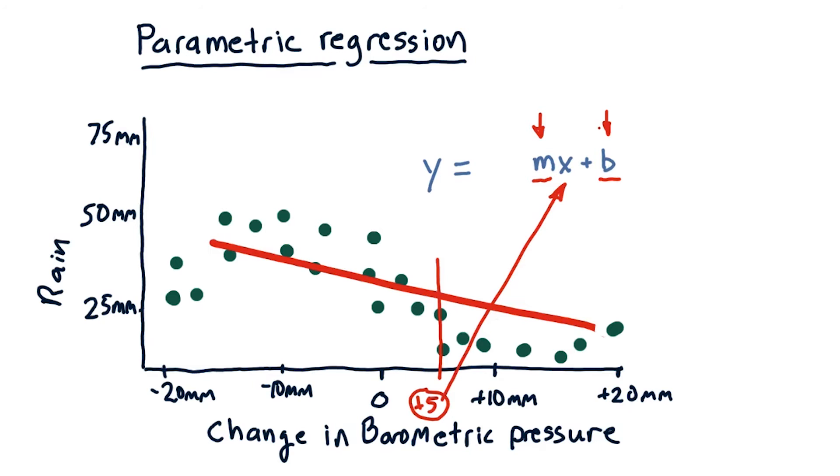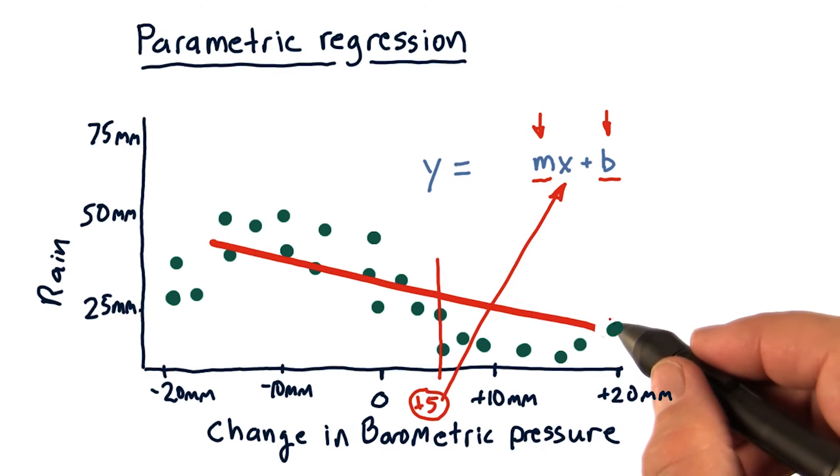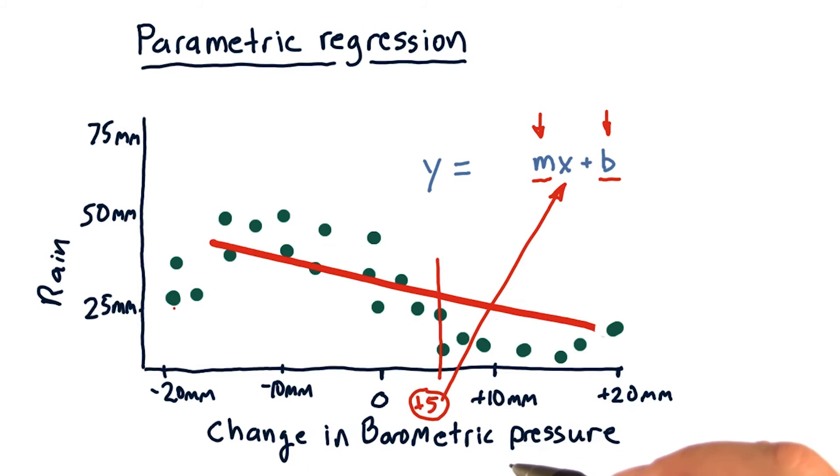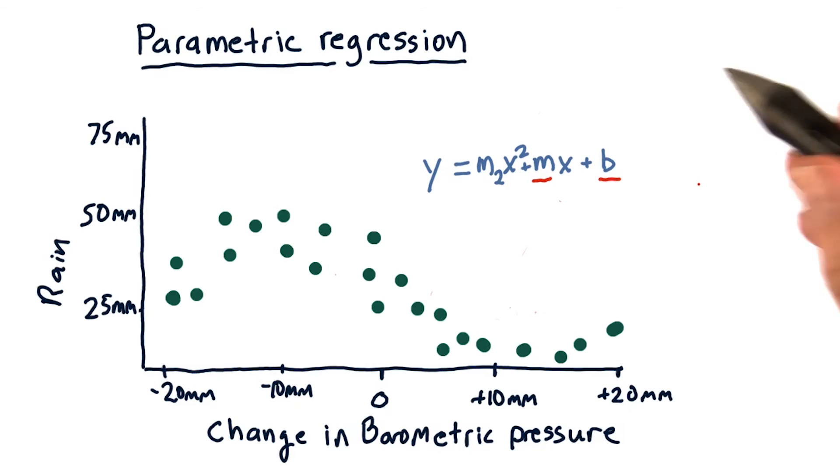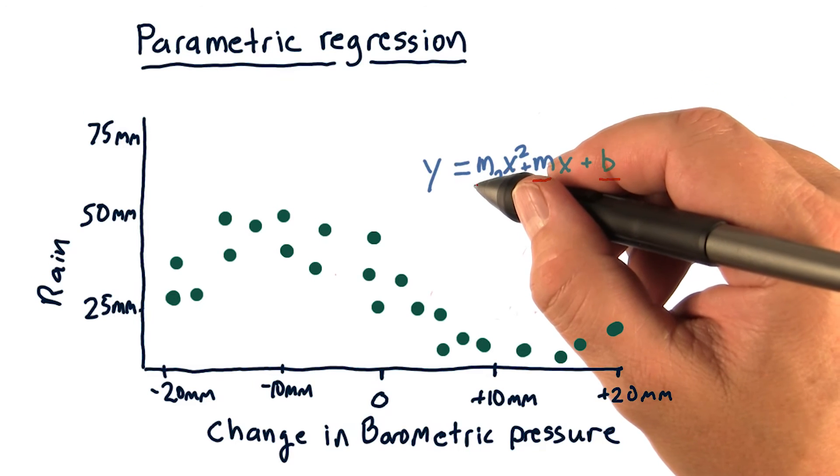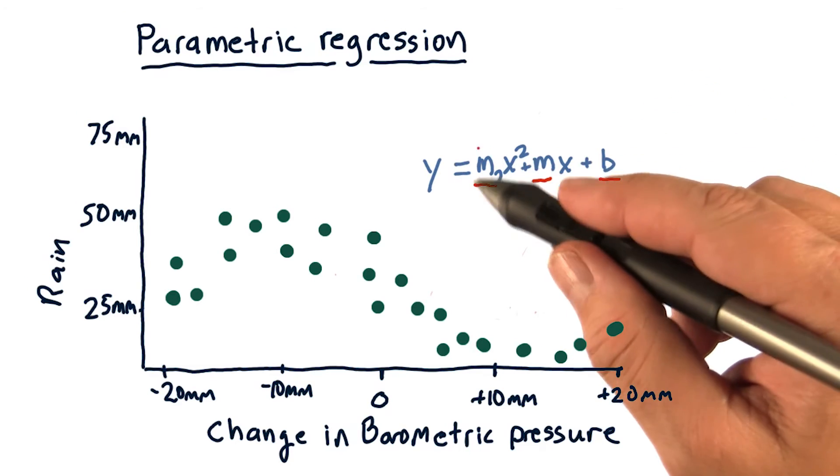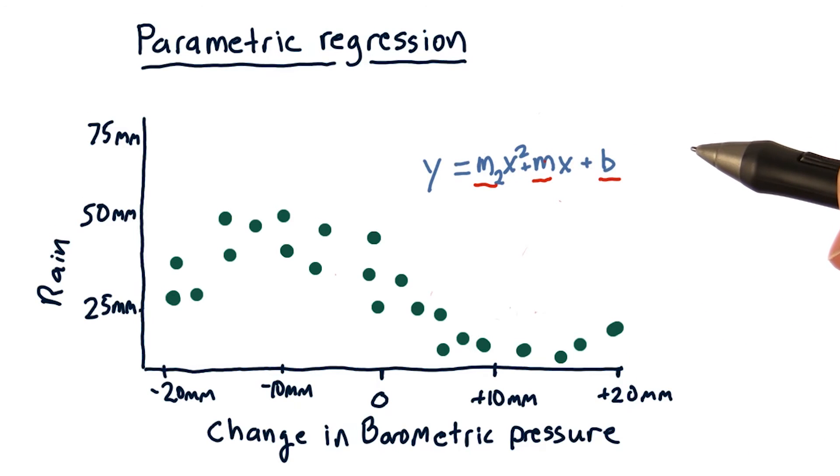This model is decent, but it doesn't track the actual behavior of the data. For instance, in this region and in this region. So we can make a more complex model. Instead of fitting a line, we can fit a polynomial. We can add one more term, x squared, and now we've got to also find this additional parameter, m2.